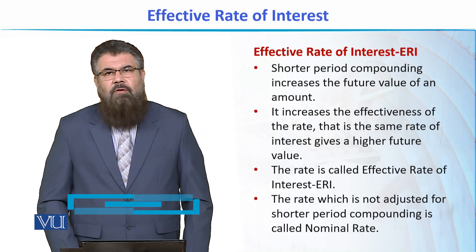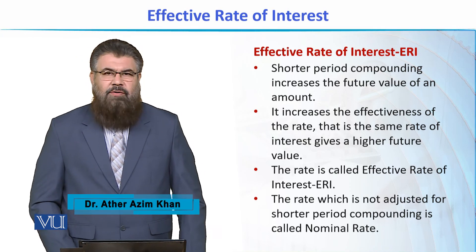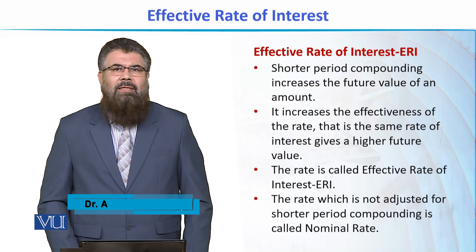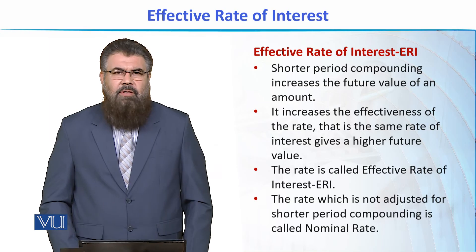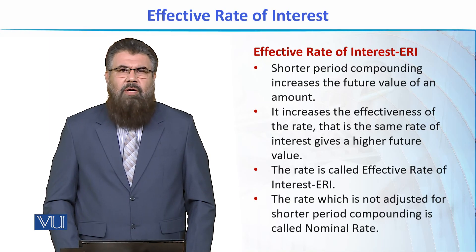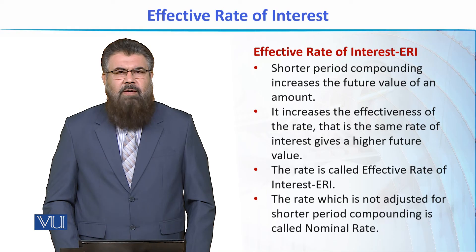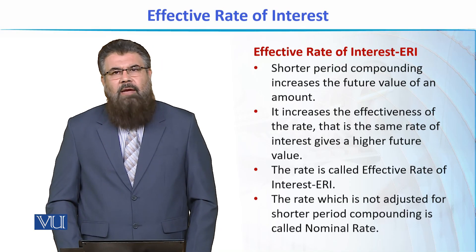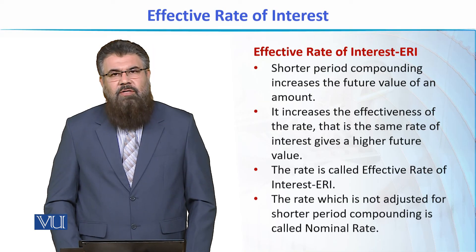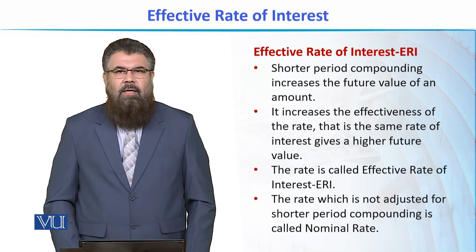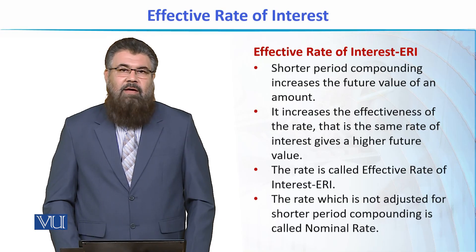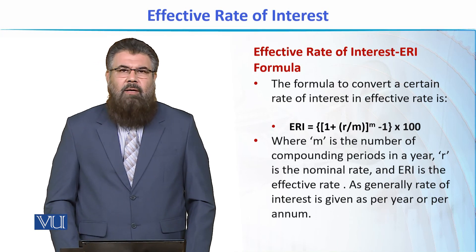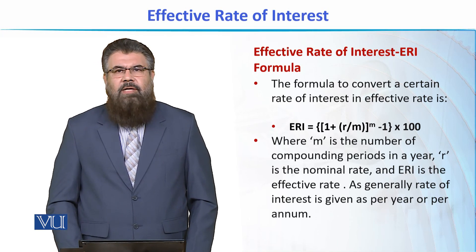The rate of interest which is not adjusted for shorter period compounding is called simply the nominal rate of interest. We have another rate which is adjusted for shorter period compounding, giving us the increase in the effectiveness of that rate.